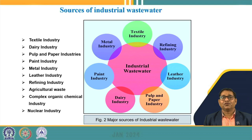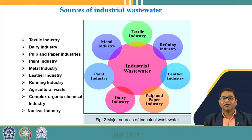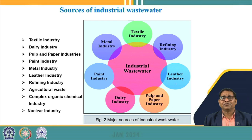Let us talk about different sources from where wastewater is generated from industries. We have different types of industries starting from textile, metal industries, refineries, leather industries, pulp and paper, dairy industries, and paint industries. These industries use various types of raw materials, acids, and minerals, and ultimately during the process, a lot of impurities get involved in the water.